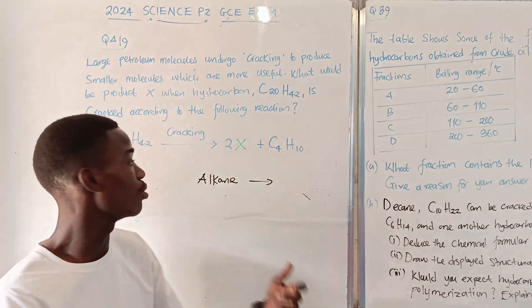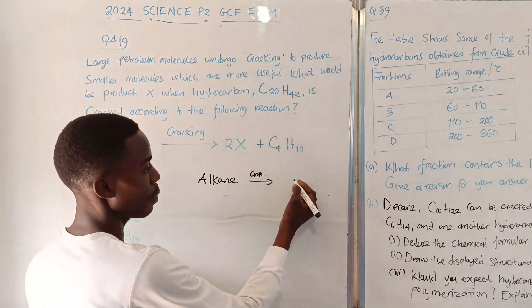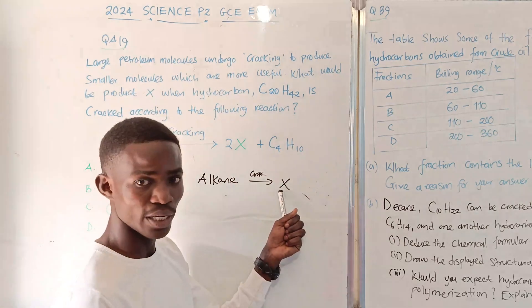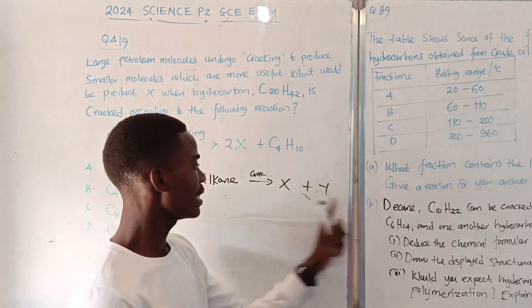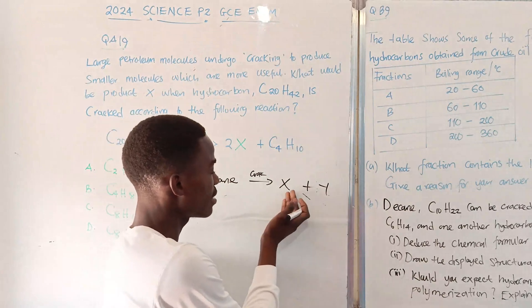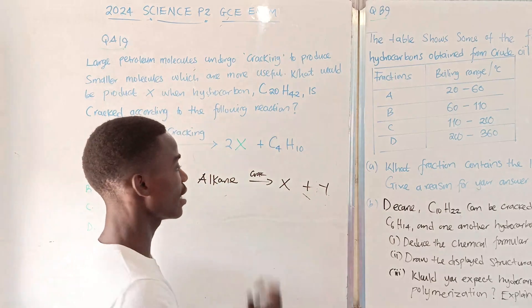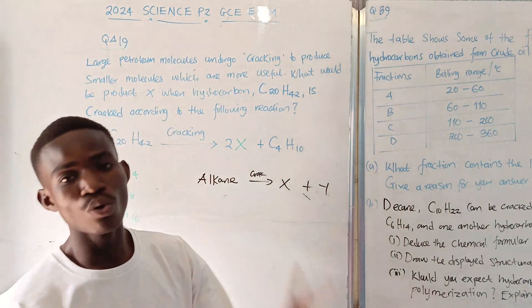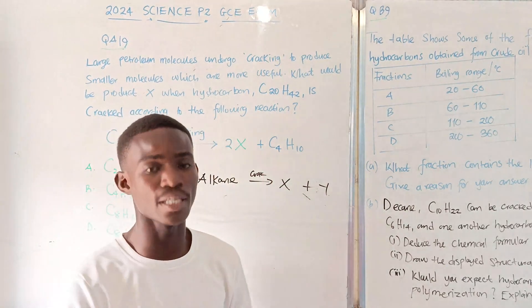If it undergoes cracking, it will now produce this hydrocarbon X plus another hydrocarbon Y. When cracking occurs, two types of hydrocarbons are produced. One is an alkane, another one is an alkene.